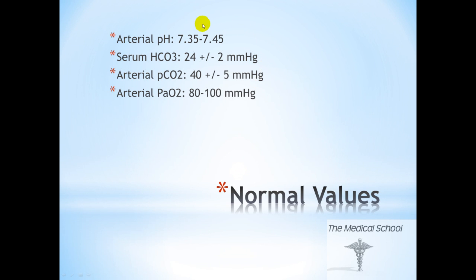Here are the normal values that you'll see on an ABG, or arterial blood gas. Arterial pH is usually 7.35 to 7.45. Serum bicarb is 24, plus or minus 2. Arterial pCO2 is 40, plus or minus 5. And arterial pO2 is usually 80 to 100. It's important to note the normal values so that you can identify abnormal values when you're trying to tackle acid-base disorders.